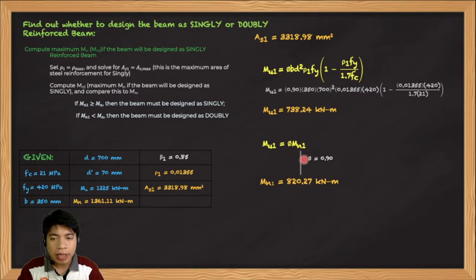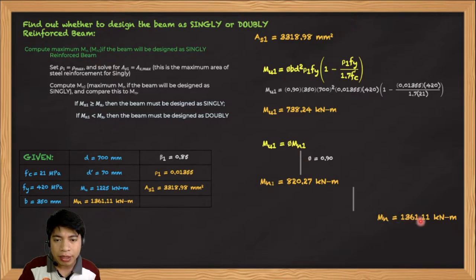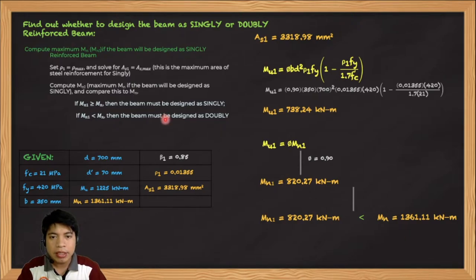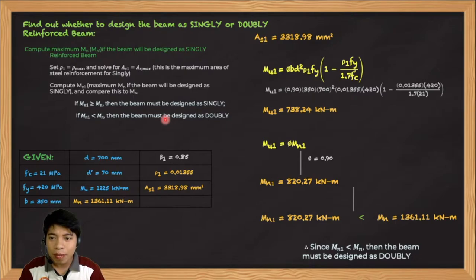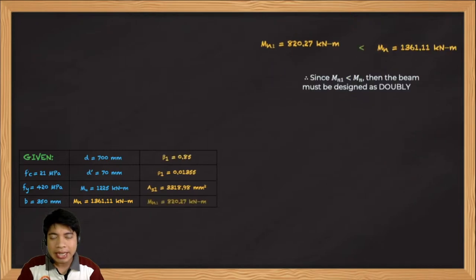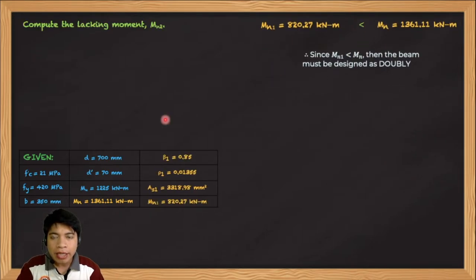Comparing MN1 = 820.27 kN·m with MN = 1,361.11 kN·m, we see that MN1 is less than MN. This means the singly reinforced beam cannot carry the required nominal moment, so the beam must be designed as doubly reinforced.